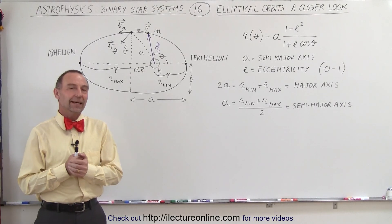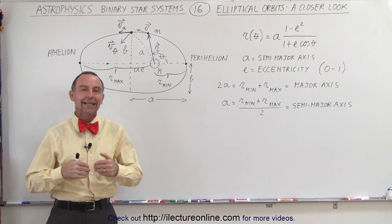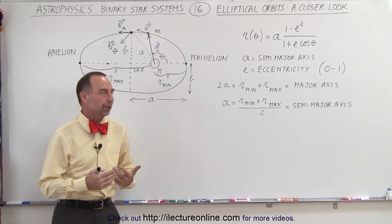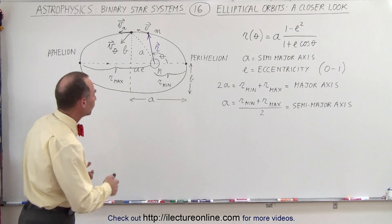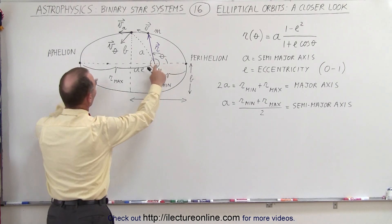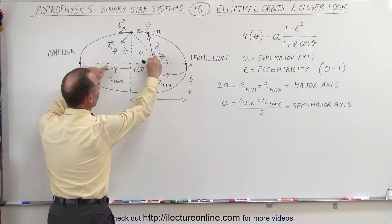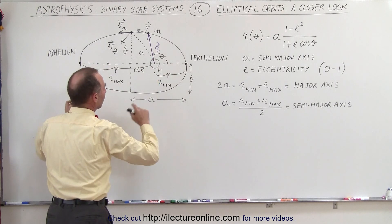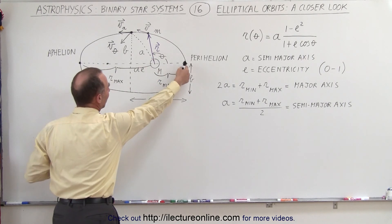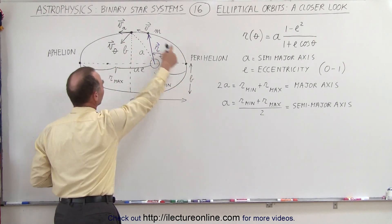Welcome to ElectronLine. Now let's take a closer look at the elliptical orbit. Notice here we have an ellipse, two foci, the sun at one of the foci, and then here we have a planet going around the sun.